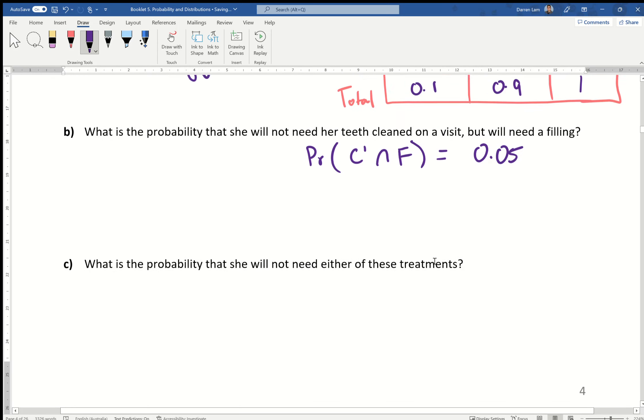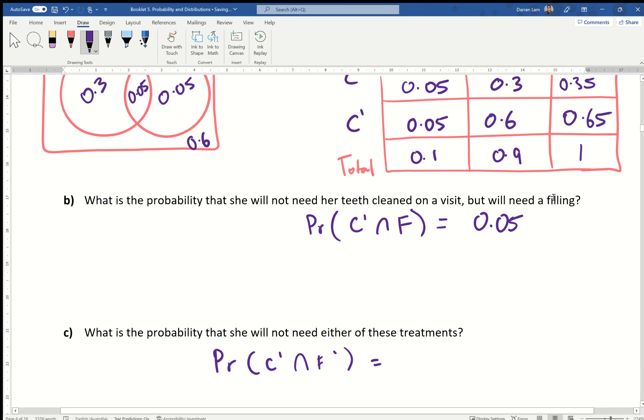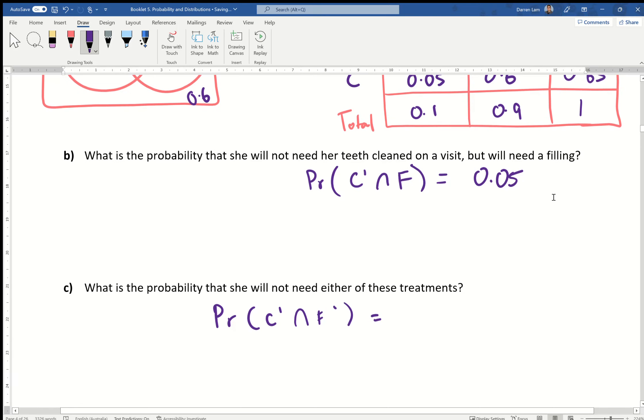What is the probability that she will not need either of the treatments? Of course we know that means probability of C dash intersecting with F dash, which gives us an answer of 0.6. Remember, we had 0.6 on the outside of the two circles because they're not included in C and F. Therefore that would be 0.6.